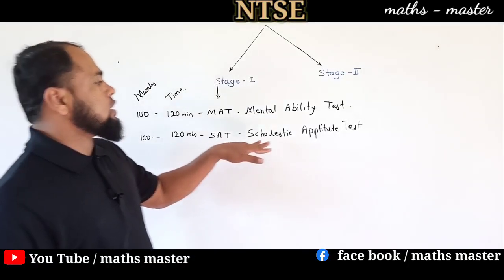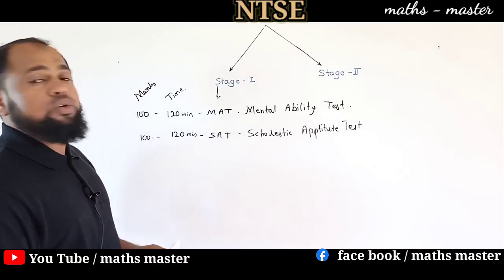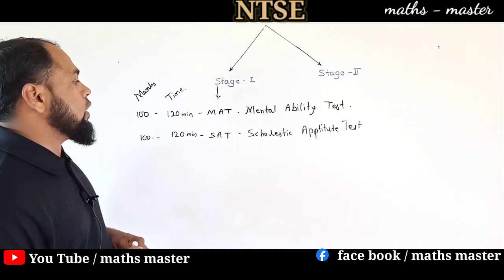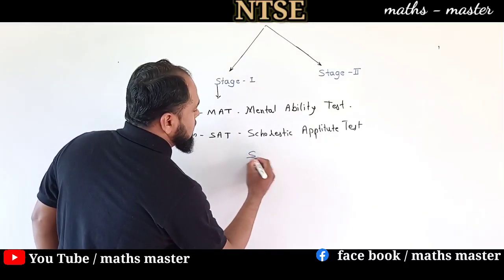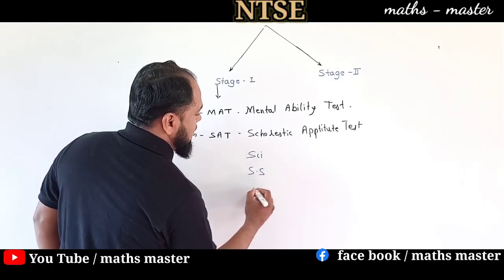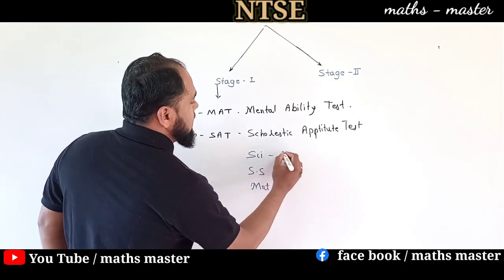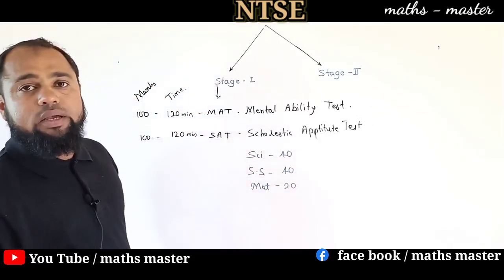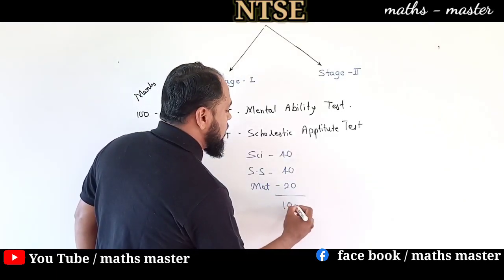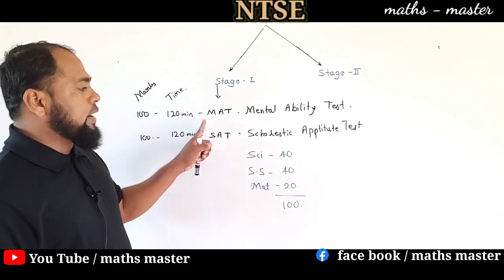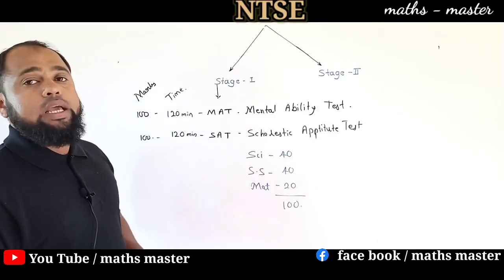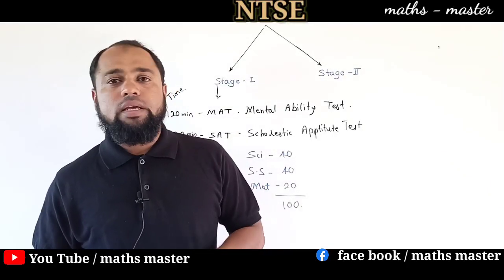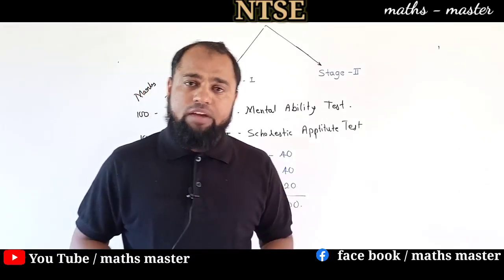SAT is a Scholastic Aptitude Test. You need to study what you have studied in Class 9 and 10 in the state board, especially Science, Social Science, and Maths. Science is 40 marks, Social Science is 40 marks, and Maths is 20 marks — 100 marks total. With MAT also being 100 marks, the total is 200 marks. There will be a cutoff based on categories, set by the state government each year.